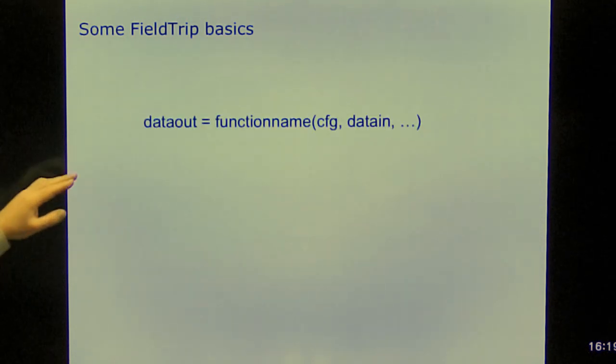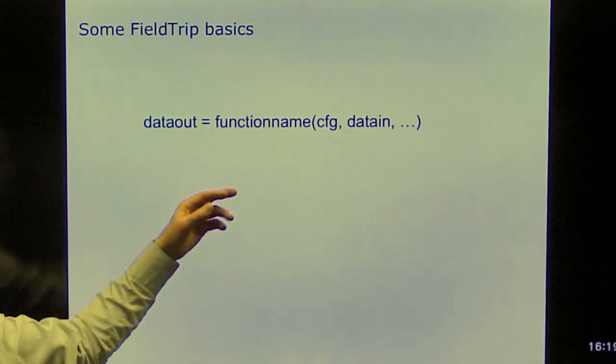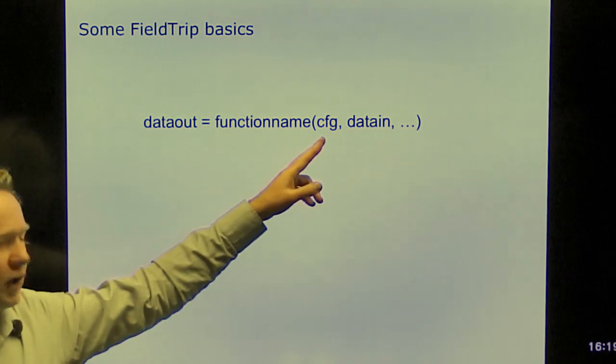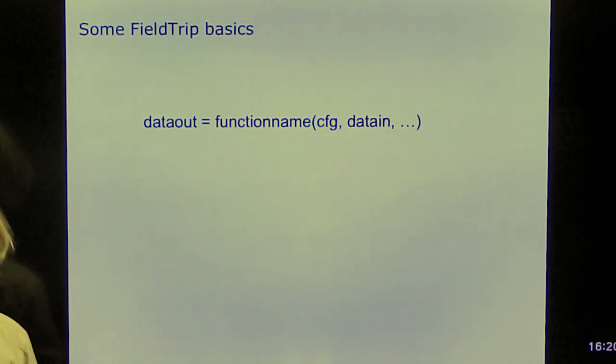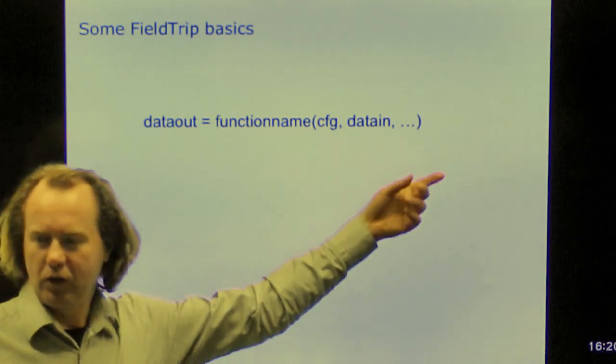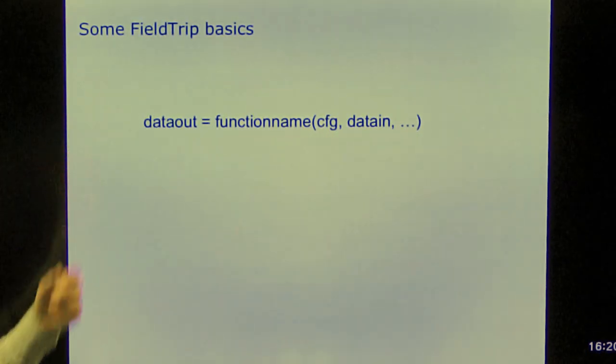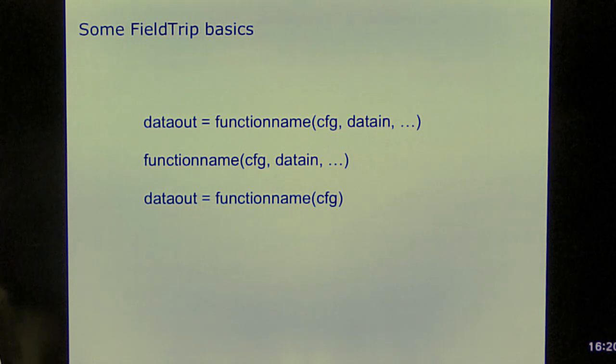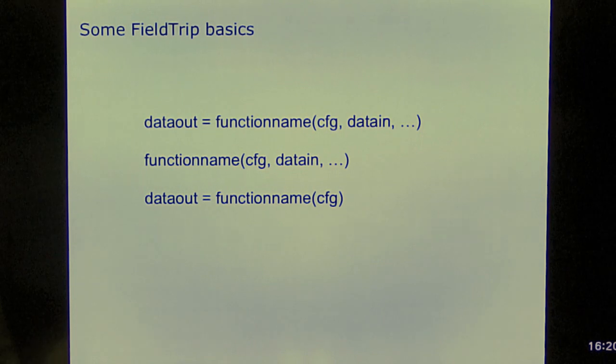FieldTrip functions follow a standardized interface. So we have functions. A function in MATLAB always has a name. And the first input argument is always the configuration structure. The configuration structure tells the function how it should behave. So it has the details to the algorithm. And subsequently it has one or multiple input data arguments and it has one or multiple output data arguments. Some functions do not produce output data, such as the plotting functions. They produce a figure, but no data. Some functions do not take input data, such as the preprocessing function. It reads from disk. It doesn't read from memory.